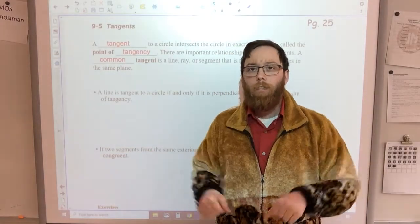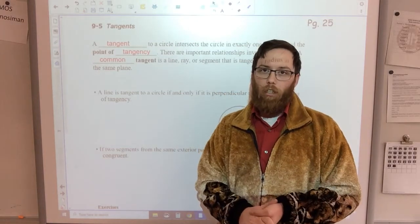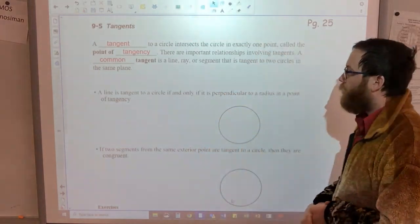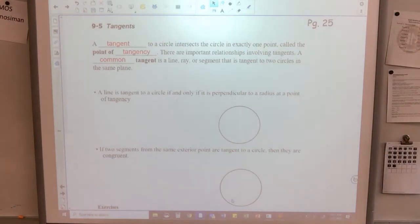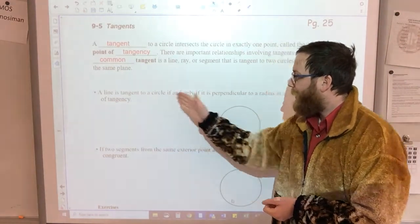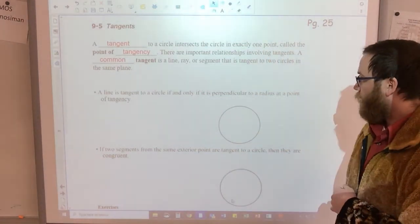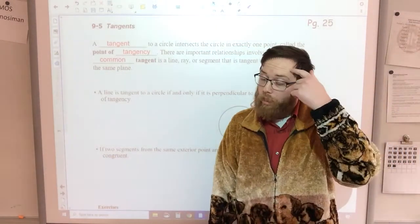Tangents are straight lines that touch the circle just at one point, and that point is called the point of tangency. As you can see here, there are three things that you're gonna want to write down in your book. So a line is a tangent to a circle if and only if it is perpendicular to the radius. So that's something to keep in mind.